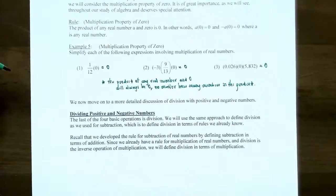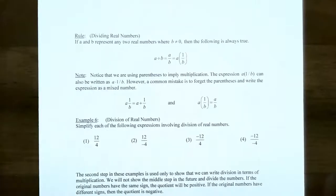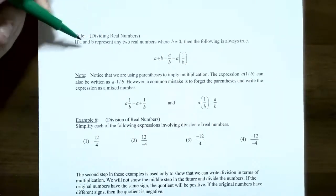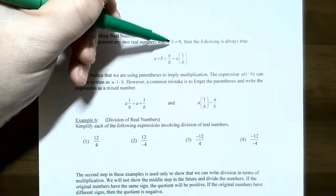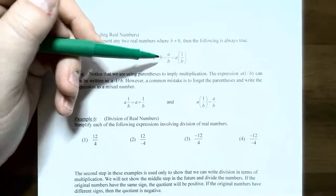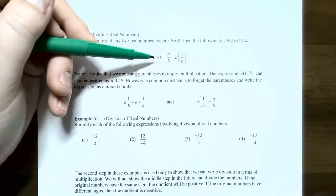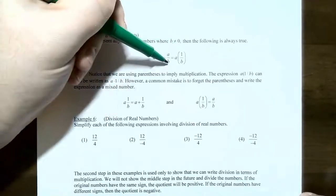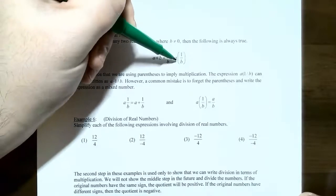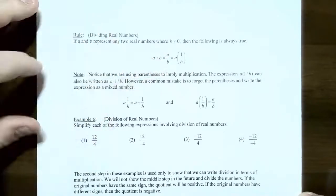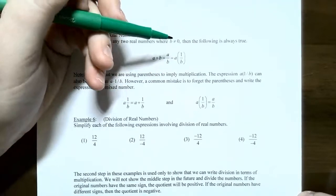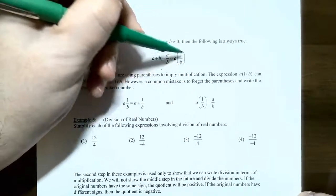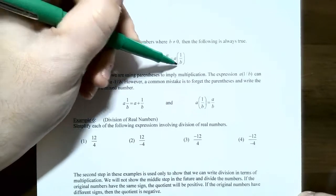Now let's move on to division of positive and negative real numbers. For any real numbers A and B where B is not 0, A divided by B equals A times 1 over B. B cannot be 0 because dividing by 0 is undefined. Now that we've rewritten division as multiplication, we can use the same sign rules: if both numbers are the same sign, the quotient is positive; if one is negative and the other is positive, the quotient is negative.